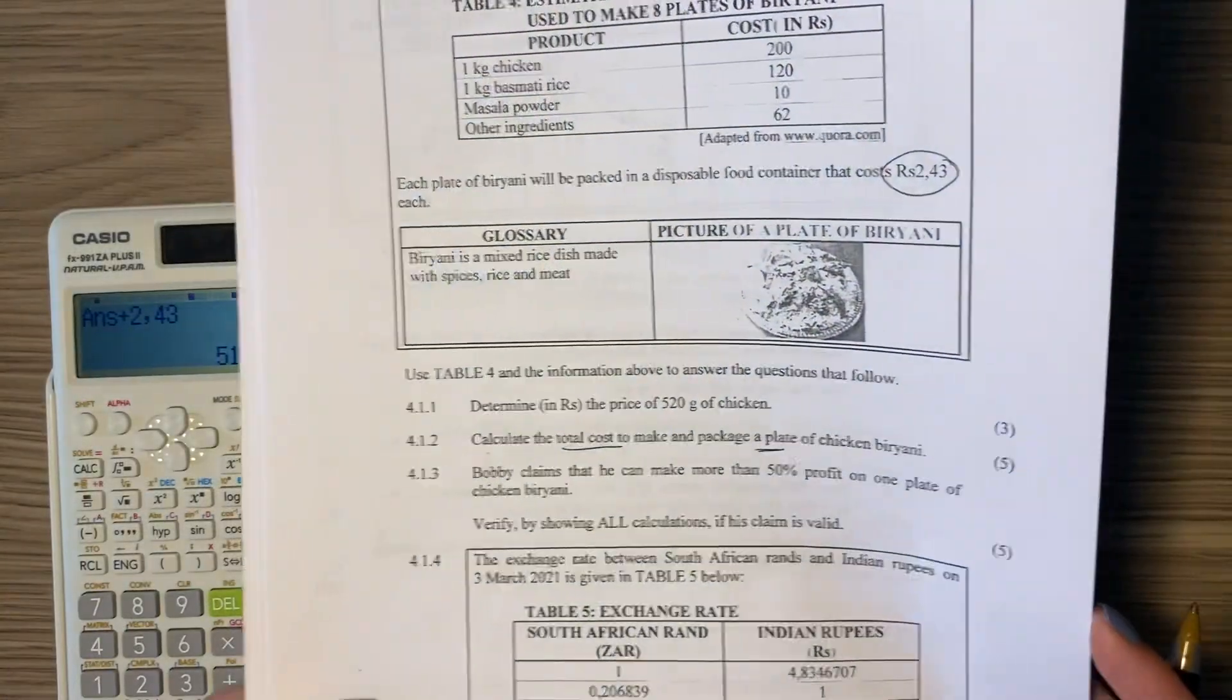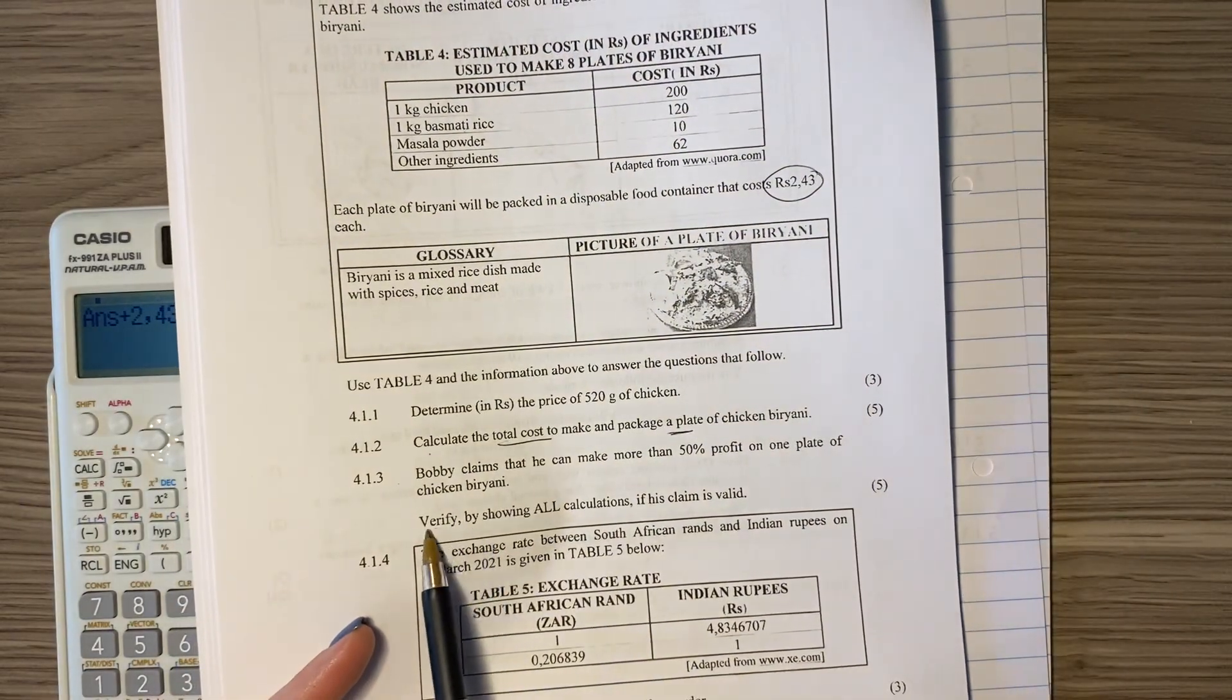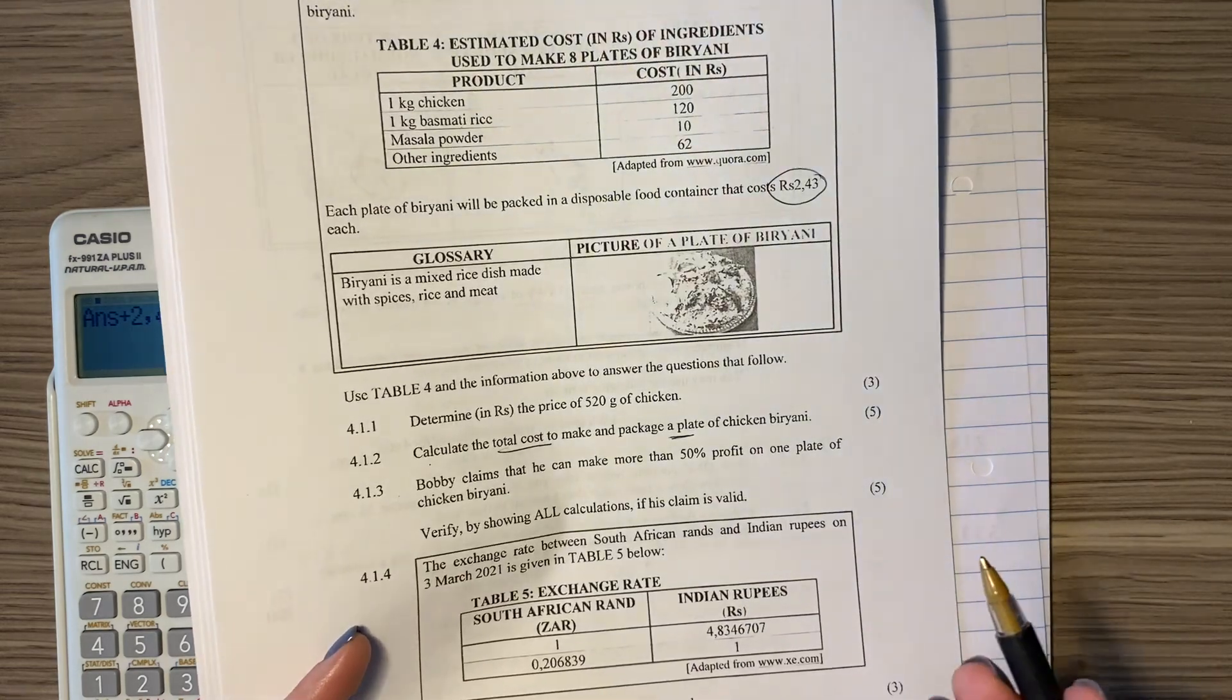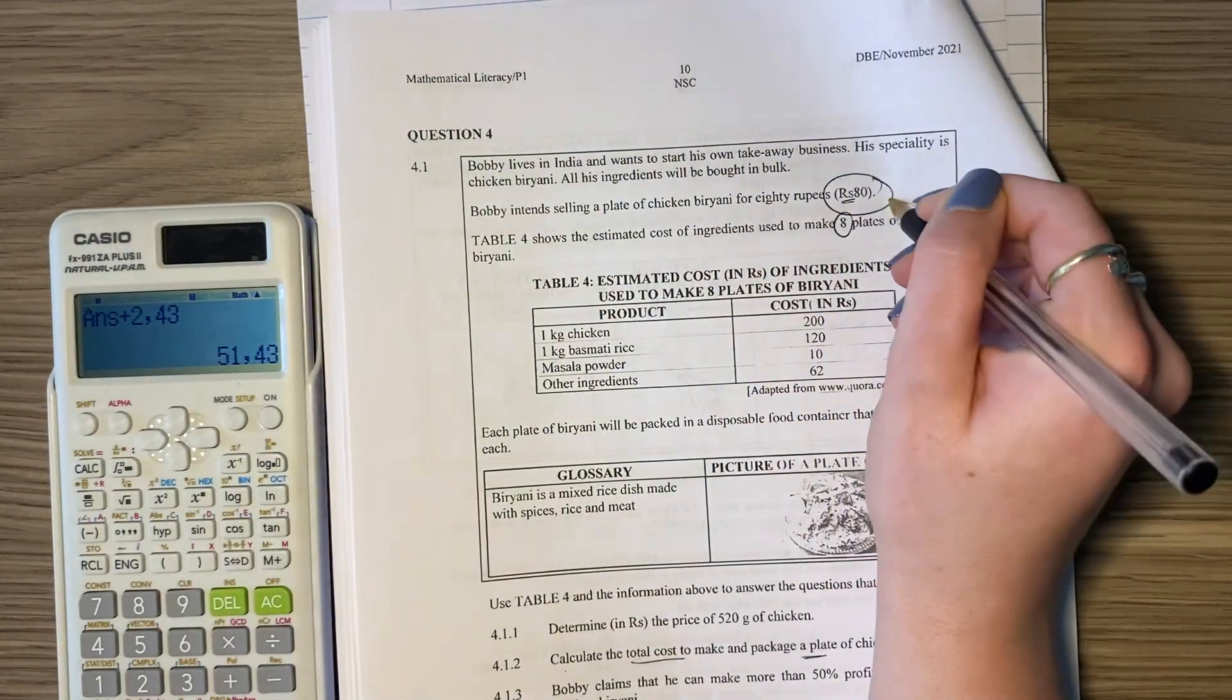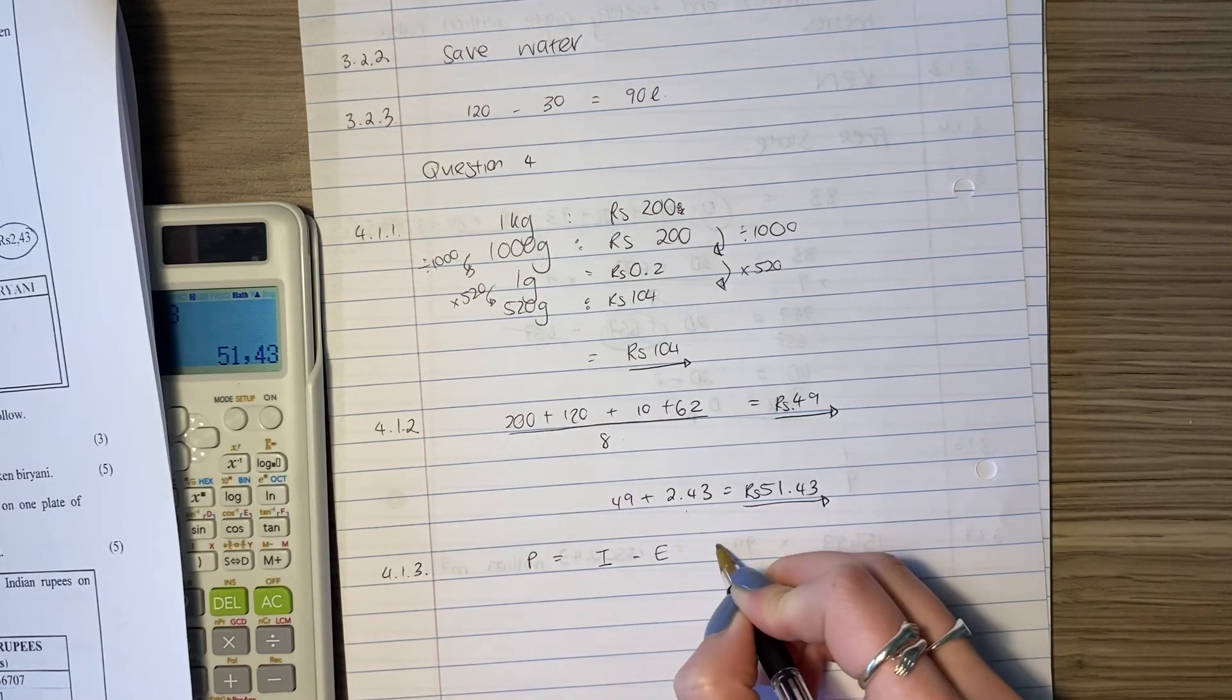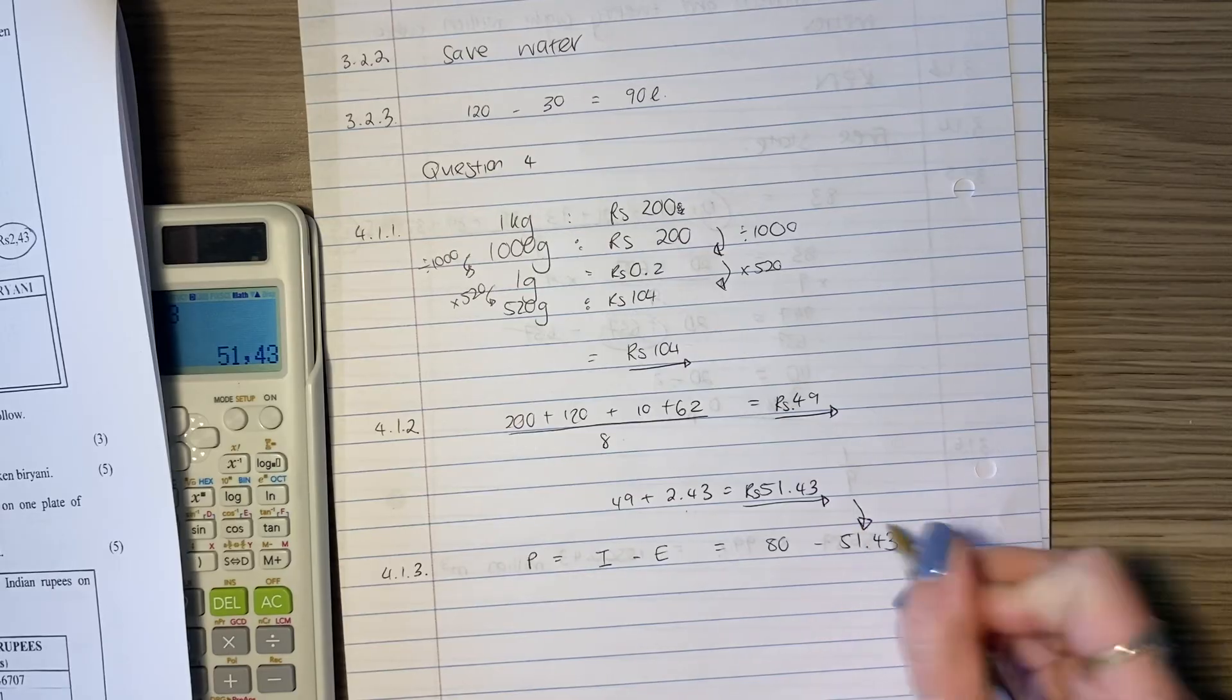Let's move on to the next question. Bobby says that he can make more than 50% profit on one plate of chicken bryani. Verify by showing all calculations if his claim is valid. Is his claim valid? Five marks. We need to work it out. So how much is he going to sell each of these plates for? Told us. 80. So I have to say, okay, well, how much is his profit? His profit is going to be his income minus his expenses, which is going to be 80 minus 51.43. Where did this come from? Over there.